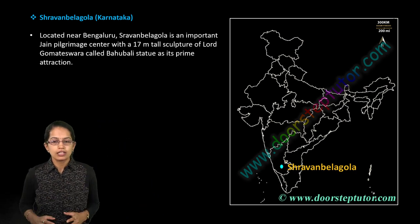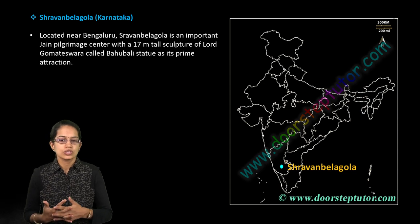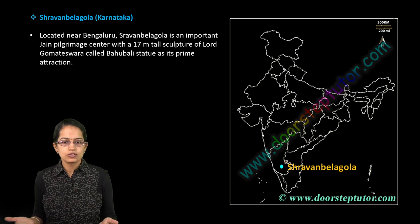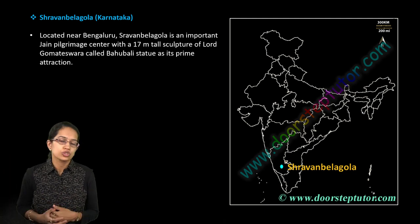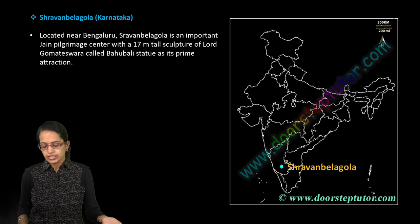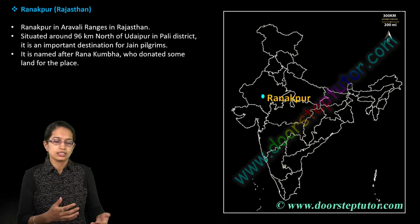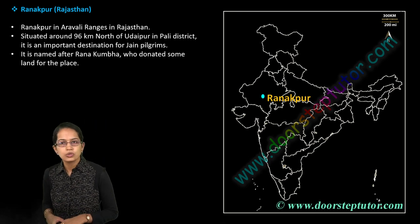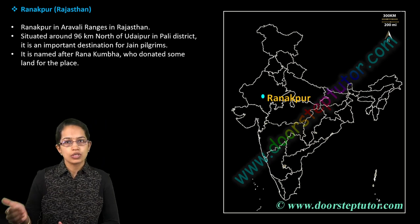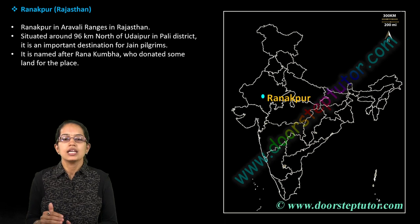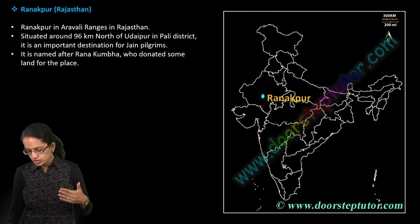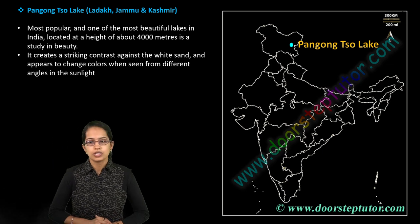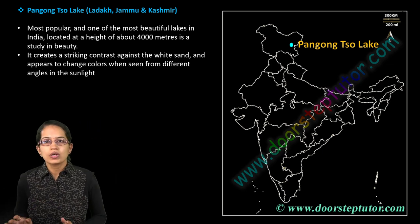Shravanabelagola was in news recently. It's located near Bangalore and is one of the places where you have a very huge statue of Lord Gomiteshwara as per the Jain tradition. The next is Ranakpur, located in Rajasthan — again a Jain pilgrimage. It is located close to the Udaipur region in the Pali district and lies in the Aravalli ranges. The land was given by Rana Kumbha for its development.